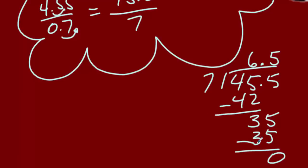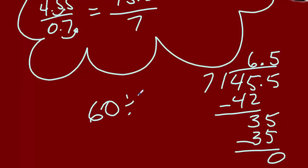So now we have our quotient, and does that quotient make sense? It does because the estimated quotient we had in the last problem was 60. This is 1 tenth of that, and if we divide 60 by 10 we would end up with 6 — and I can see how extremely close that is to the actual answer of 6.5.